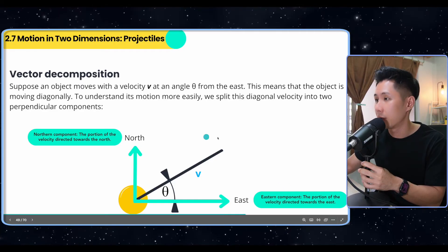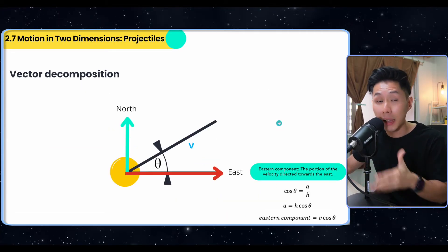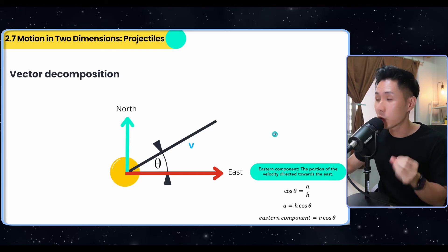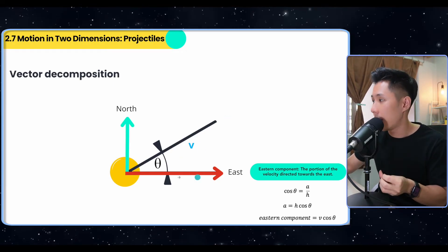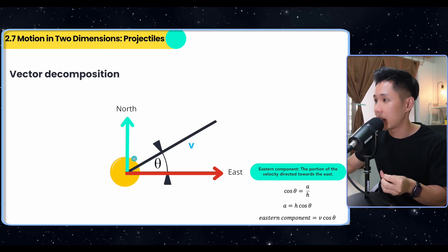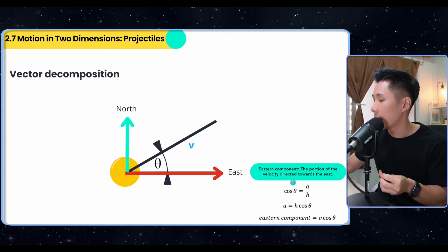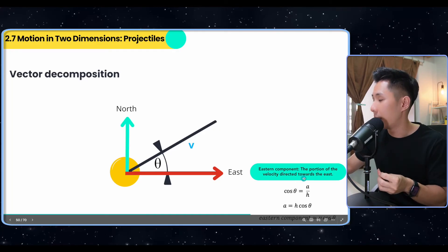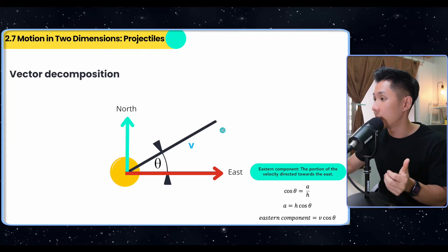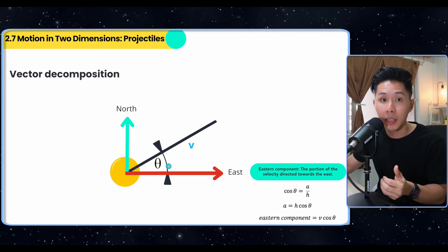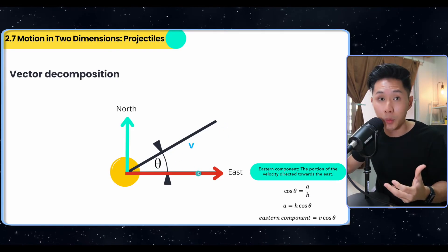It's the process of breaking down a vector here, V, into its perpendicular components. So suppose an object moves with a velocity V at angle delta from the east. This means that the object is moving diagonally. And it's pretty hard to analyze a diagonal movement. That's why we often break it down into its horizontal and vertical component. In this case, I named it eastern and northern. And to calculate the value of those components, again, trigonometry comes in. I know the angle. I know the velocity. To find out the value of this, you can see that I have the adjacent, I have the hypotenuse. That's when I can use cosine. And by doing some linear algebra, I will find that the eastern component is V cos delta. So if you substitute all the values in, you should find the eastern component.